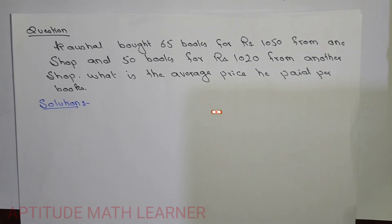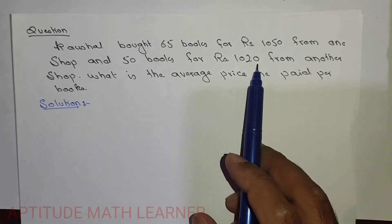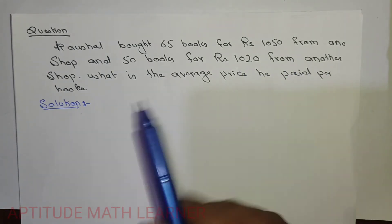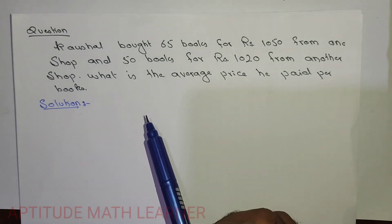So let's begin with the question. Here we are having a question: Kaushal bought 65 books for rupees 1050 from one shop and 50 books for rupees 1020 from another shop. What is the average price he paid per book?